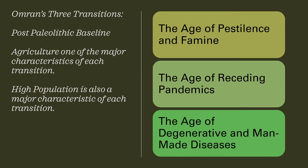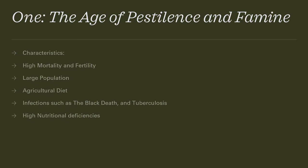The first transition is the age of pestilence and famine, the second is the age of receding pandemics, and the third is the age of degenerative and man-made diseases.